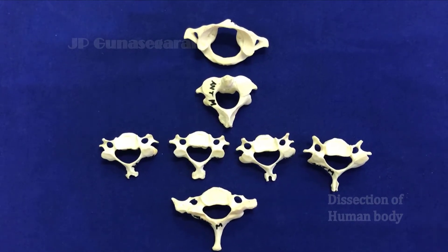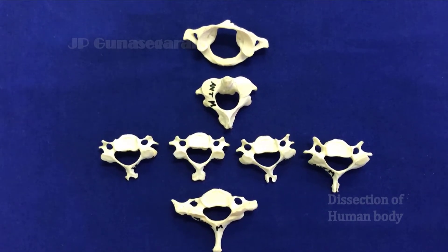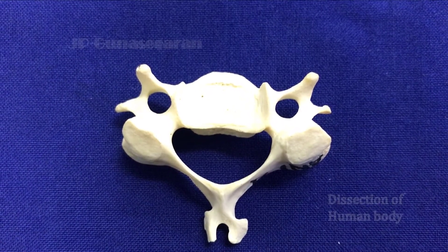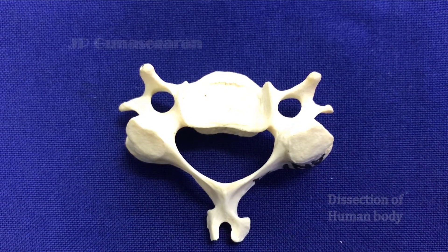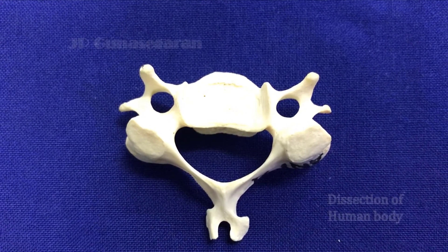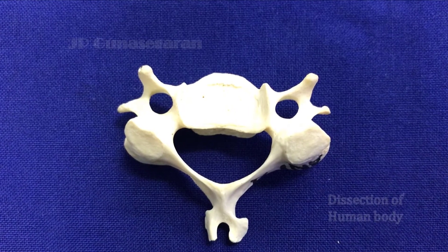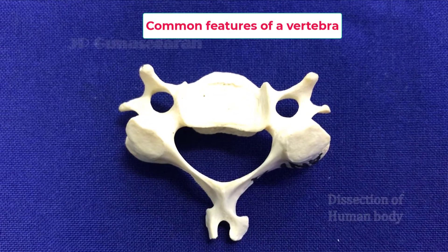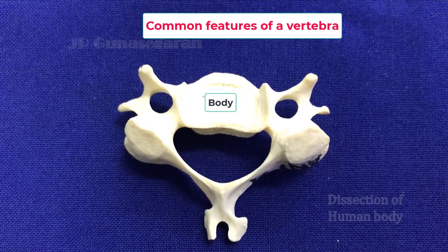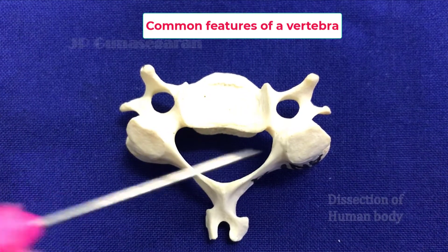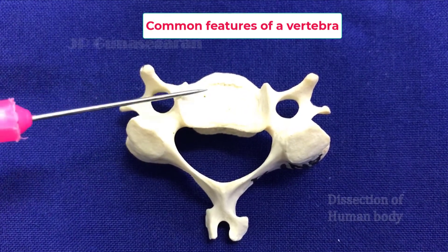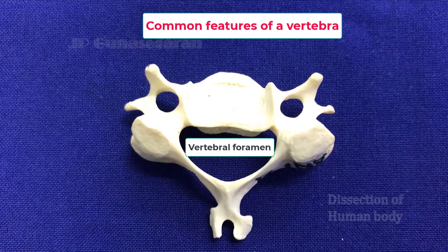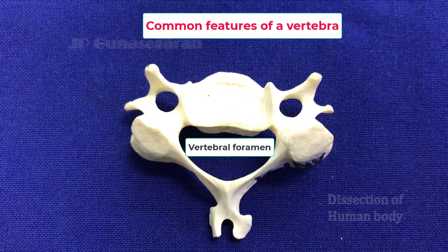First let us see the features of typical cervical vertebrae. What is displayed here is a typical cervical vertebra. Before going into the details, let us revise the features of a vertebra. Most vertebrae — cervical, thoracic, and lumbar — contain a body in front and a vertebral arch behind. Enclosed between these two parts is a foramen called the vertebral foramen, which contains the spinal cord with its meninges and blood vessels.